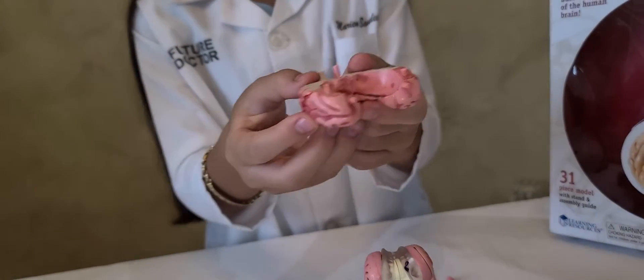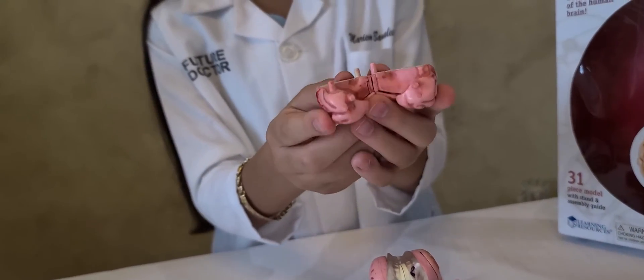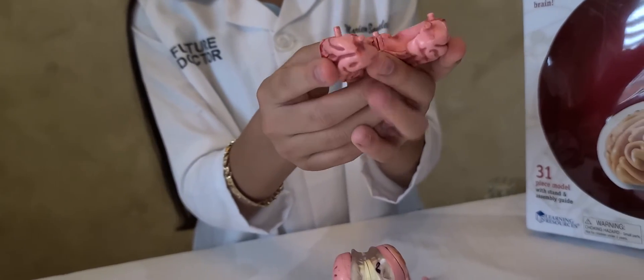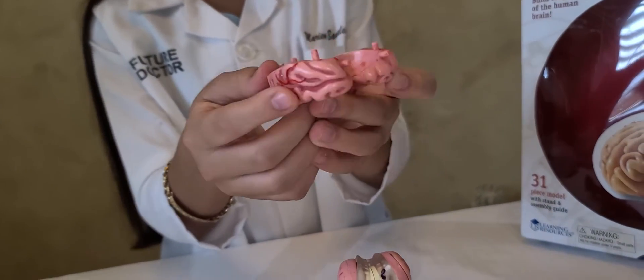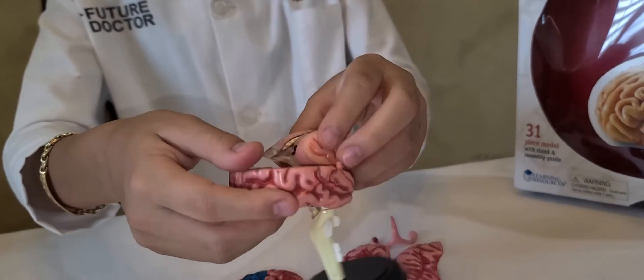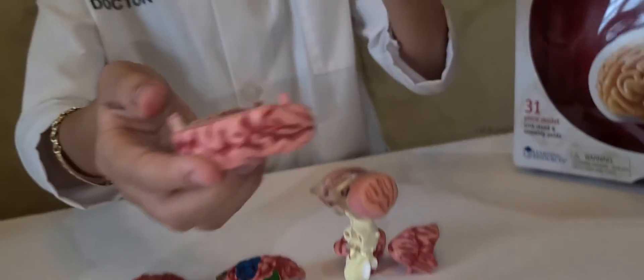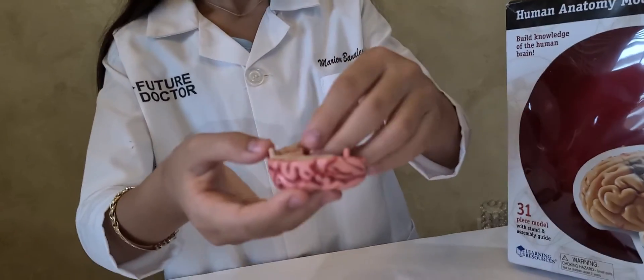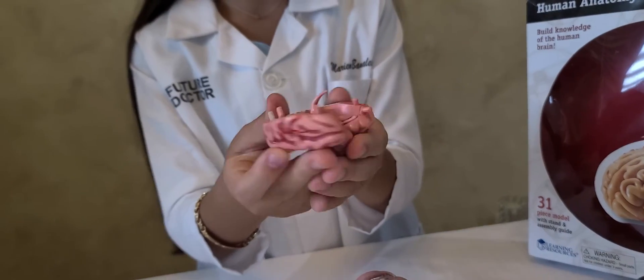The next piece is called the temporal lobe and the temporal lobe controls auditory perception, speech, language comprehension and visual recognition. And before I put it on here, I need to put the hippocampus in. The hippocampus helps us have memory retention.